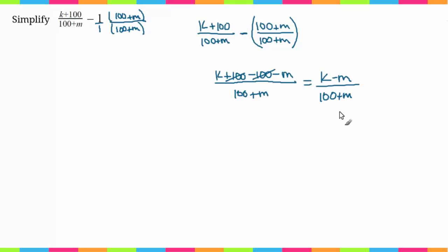So the only other way we could really write this, or the only other thing we could really do to this, is we could separate out the numerator and we could get k over 100 plus m minus m over 100 plus m.